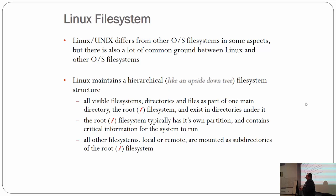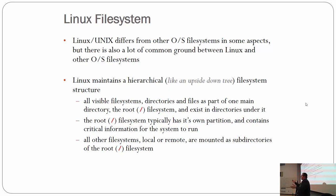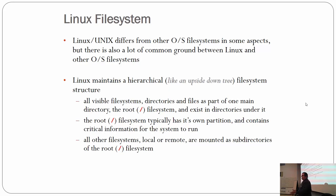One of the commonalities across operating systems is a hierarchical tree structure. In Windows, you're used to C colon backslash — that's the root of your file system. In Linux, it's just a forward slash, known as the root file system. Everything else exists below it.